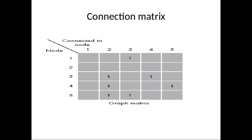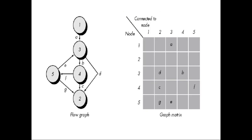A graph matrix is a square matrix whose size is equal to the number of nodes on the flow graph. Each row and column corresponds to an identified node, and matrix entries correspond to the connections between nodes. Each node on the flow graph is identified by numbers, while each edge is identified by letters.